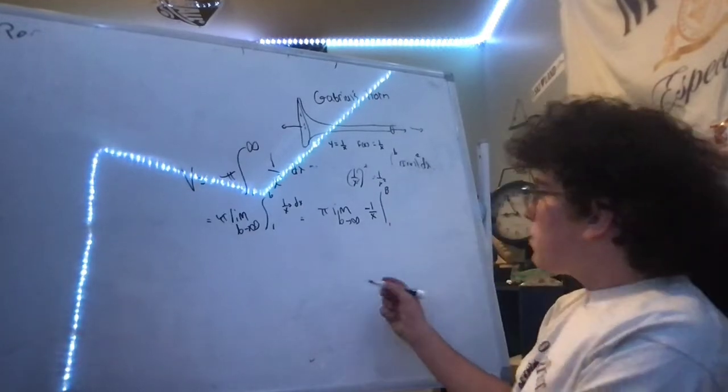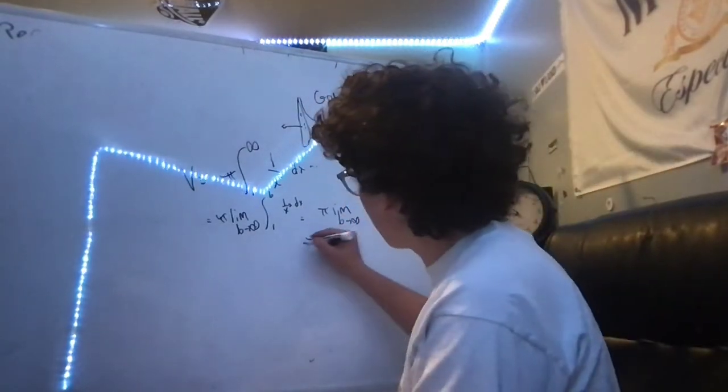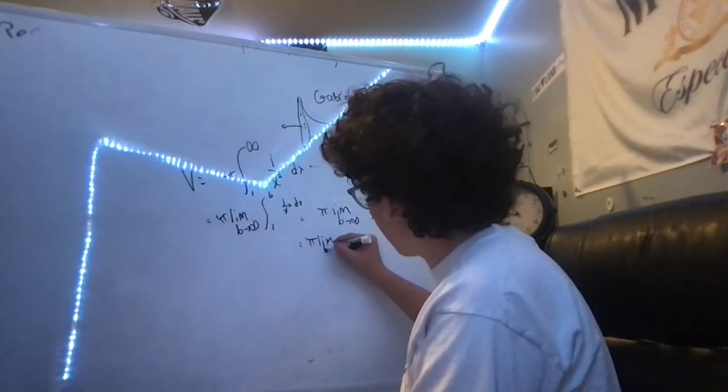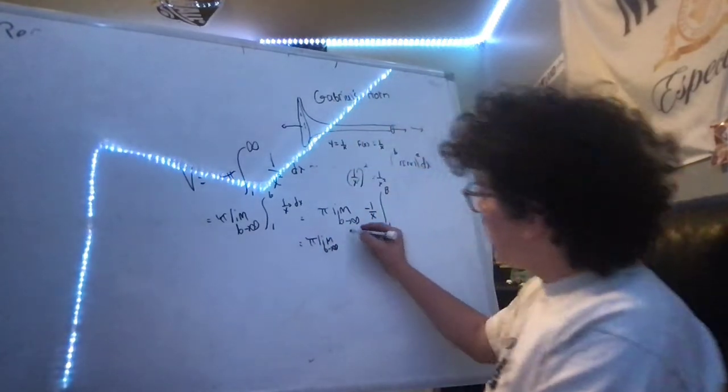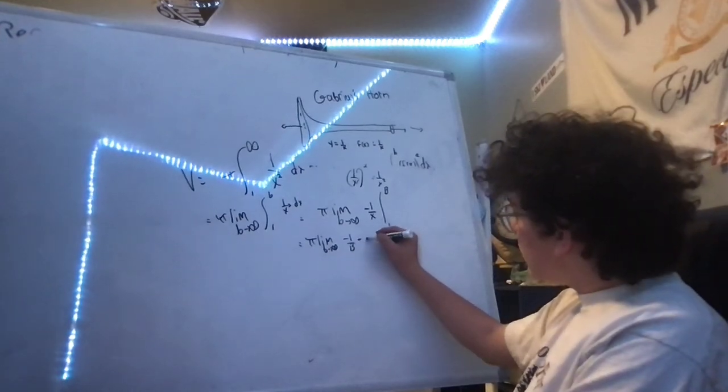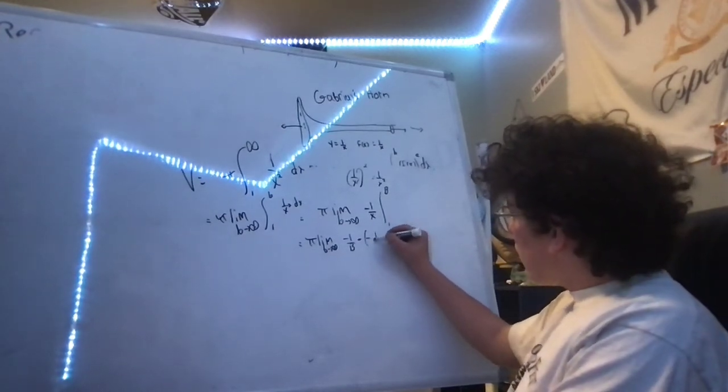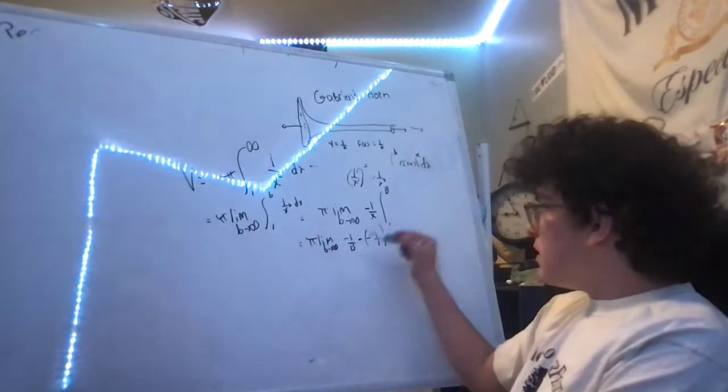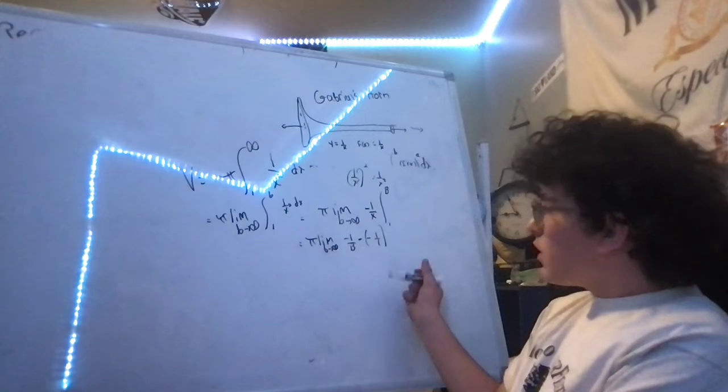We're going to say that this is the same thing as negative 1 over x evaluated from 1 to b. If we continue here, we're going to have pi limit as b approaches infinity of negative 1 over b minus negative 1 over 1. I'm just evaluating it, plugging in b, subtracting 1.